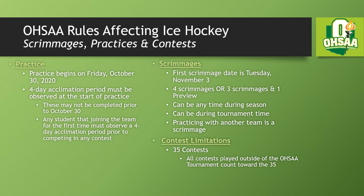Scrimmages can begin on November 3rd, assuming you complete your four-day acclimation period from October 30th to November 3rd. Should you begin practice later on, scrimmages cannot start until that four-day acclimation period is finished. You can have up to four scrimmages or three scrimmages and one preview. These scrimmages can take place at any time during the season and can even be during tournament time. Please note that practicing with another team is also considered a scrimmage, and any scrimmage must be a scrimmage for both teams — you cannot consider a game a scrimmage while the other team considers it a regular season contest.